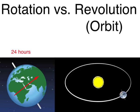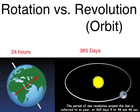Revolution — another word for that is orbit — is how long it takes an object to go around another object. In this instance, how long it takes the Earth to orbit or revolve around the Sun. The time it takes the Earth to revolve around the Sun is 365 days, but if you want to get technical, it actually takes 365 days, 5 hours, 48 minutes, and 46 seconds.